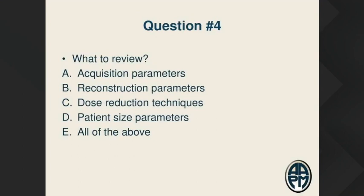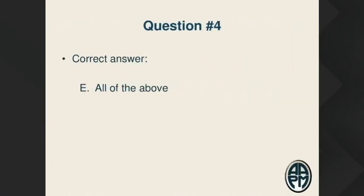Question four: What are we going to review during our CT protocol review? A — acquisition parameters, B — reconstruction parameters, C — dose reduction techniques, D — patient size parameters, or E — all of the above. The correct answer is E, all of the above. All of those things need to be included in the review process.